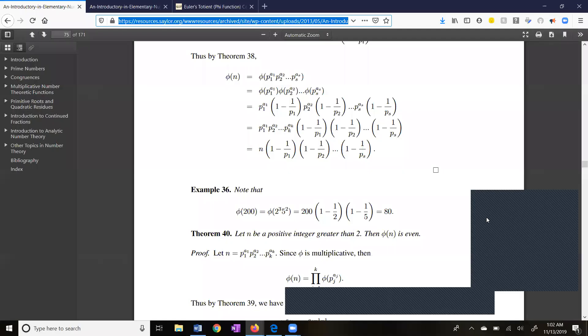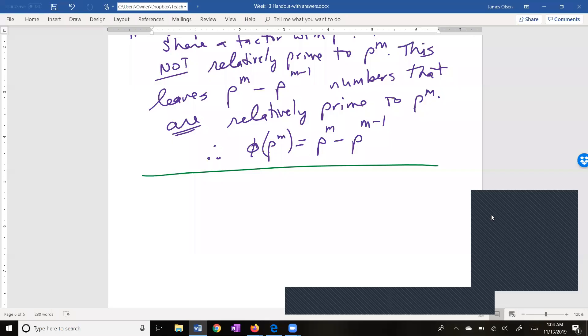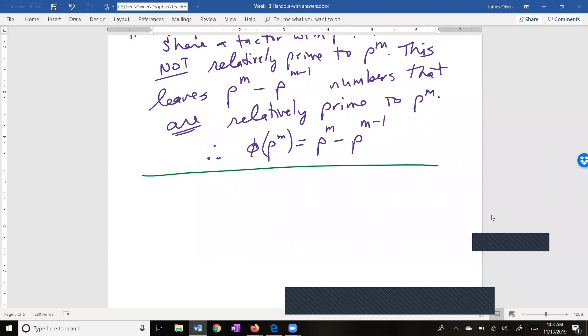Here is an example. Phi of 200. 200 is 8 times 25. 200 times 1 minus 1 half times 1 minus 1 fifth. Now let's do phi of 1,323. I like doing these big numbers because it causes us to bring together things that we've previously learned in the course. The divisibility tests. We need to get a prime factorization of 1323. You might pause the video and see if you can do that.